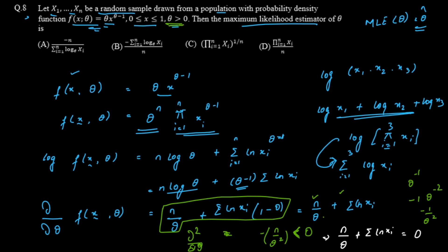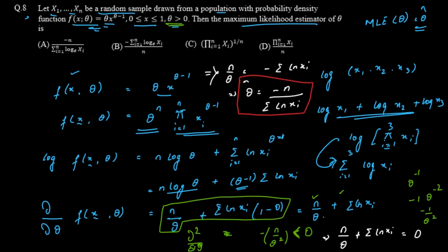Solving for θ: n/θ = −Σ ln(xi), so θ̂ = −n / Σ ln(xi). This is the MLE of θ. Checking the options, only option A has −n in the numerator and Σ log_e(xi) in the denominator, which matches. So option A is the correct answer.